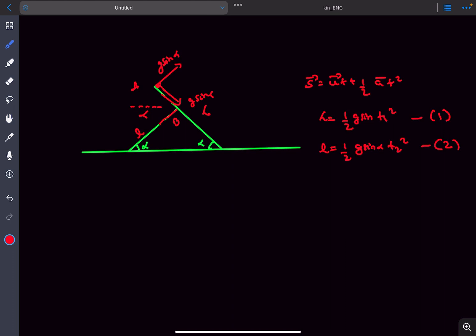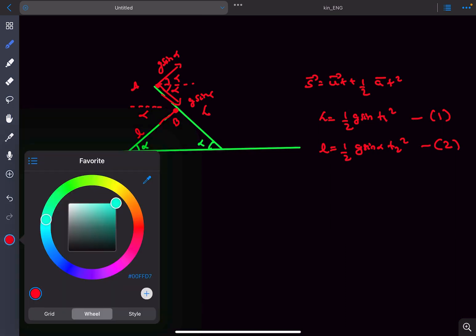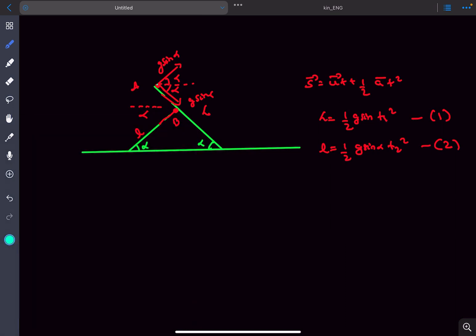This angle is going to be alpha, and this is also going to be alpha. This is what B will observe A to be. If you see carefully, the net acceleration in this case is in this direction, right? So B will observe A to move along this horizontal line. Clearly, the minimum distance is going to be this vertical line.